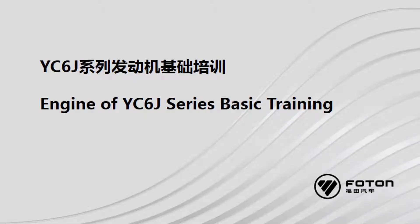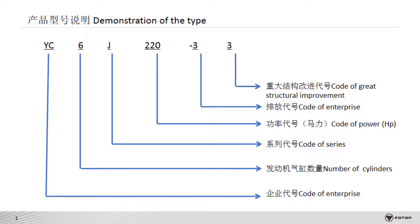The engine model is 6G220. In the model name, YC is the code of the enterprise, 6 is the number of cylinders, G is the code of series, and 220 is the power rating, and so on.